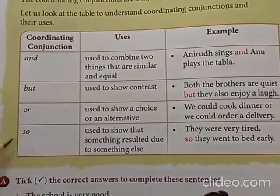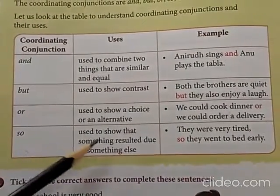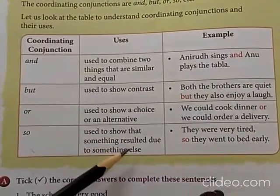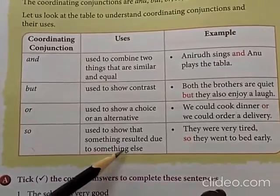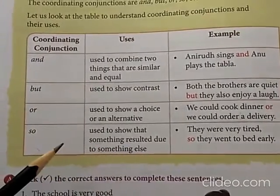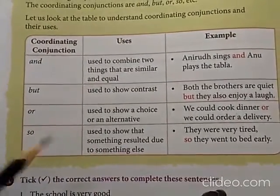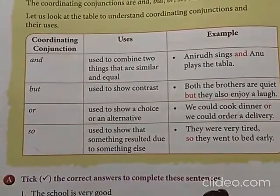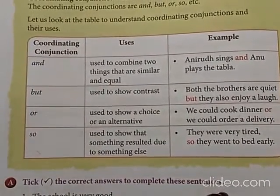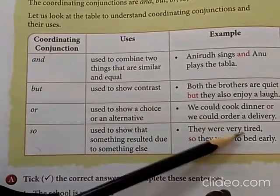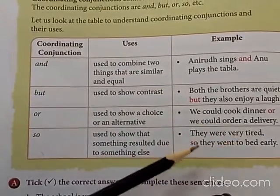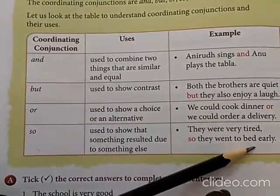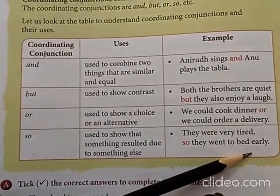Then we have the word 'so'. It is used to show that something resulted due to something else — one sentence is the result of the other. For example: They were very tired, so they went to bed early.